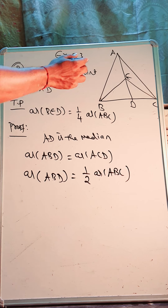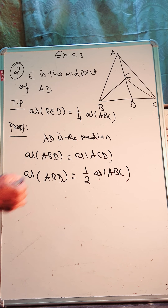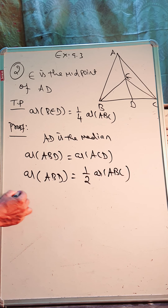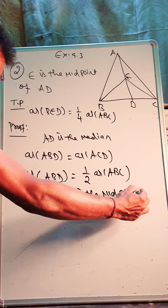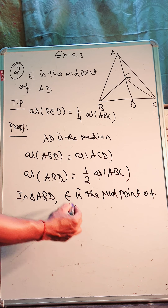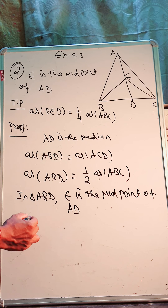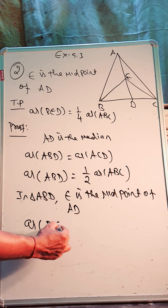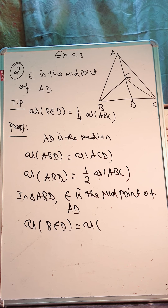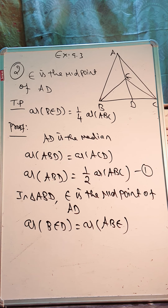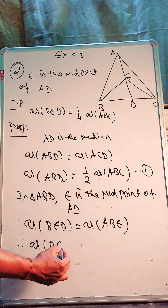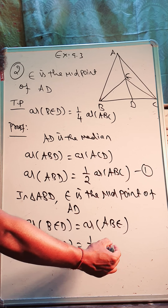Similarly, we can say: in triangle ABD, E is the midpoint of AD. So that means in triangle ABD, area of BED is equal to area of ABE. Therefore, area of BED will be half of area of ABD.